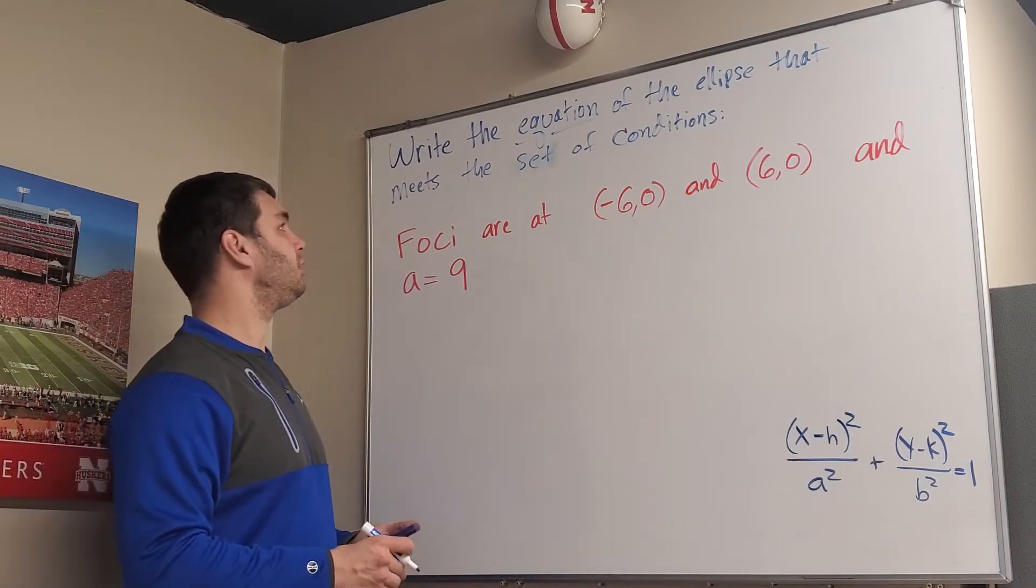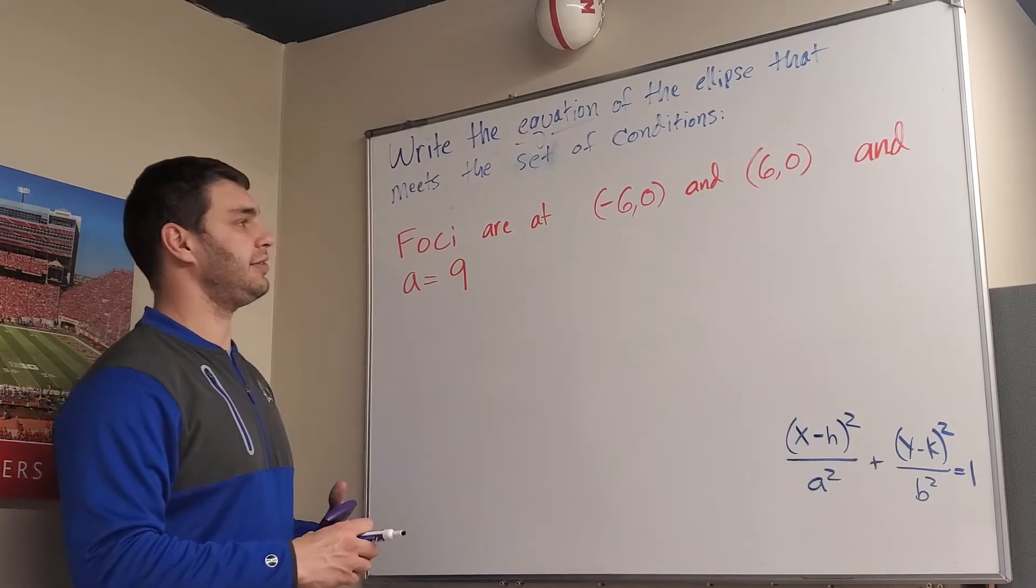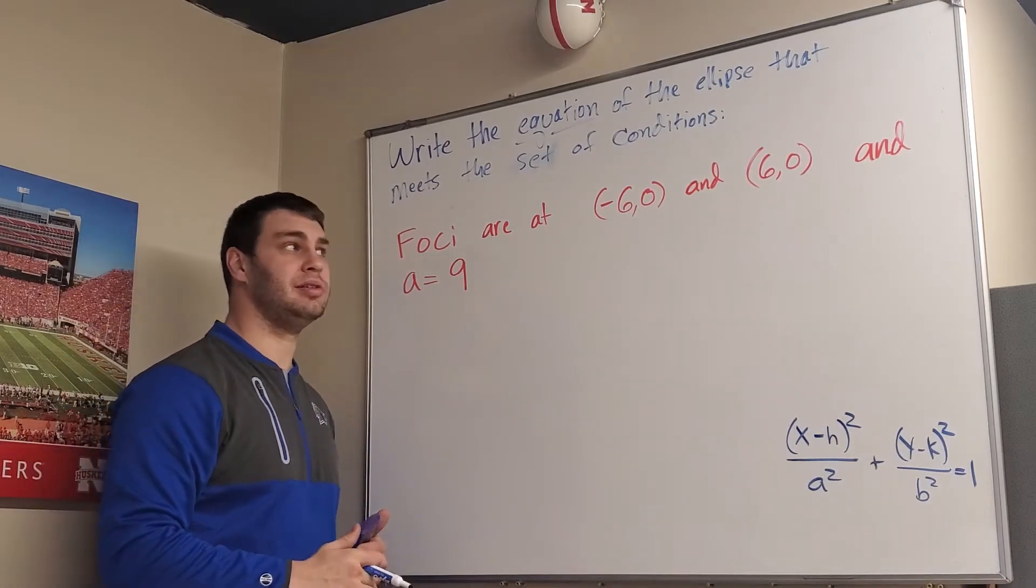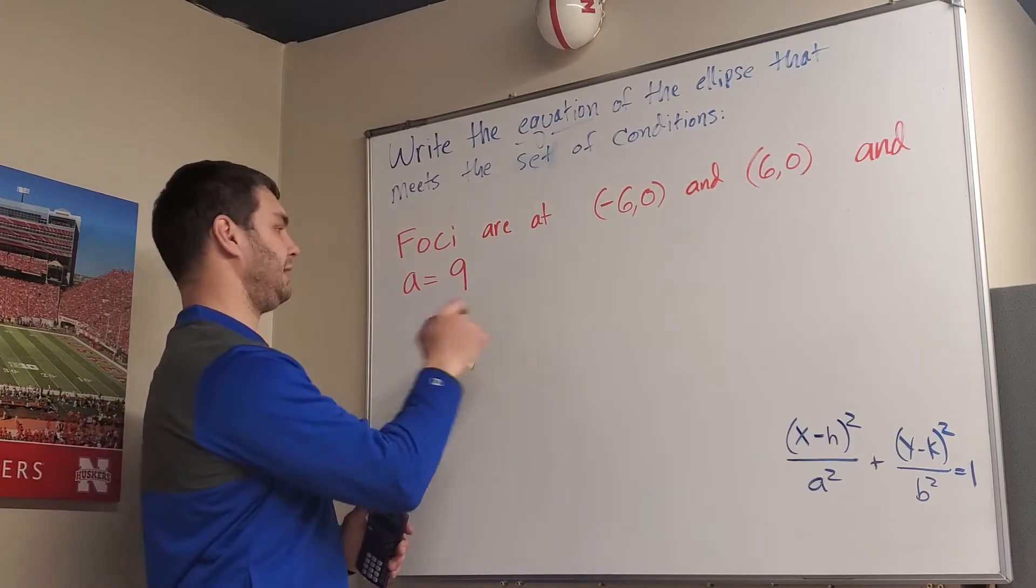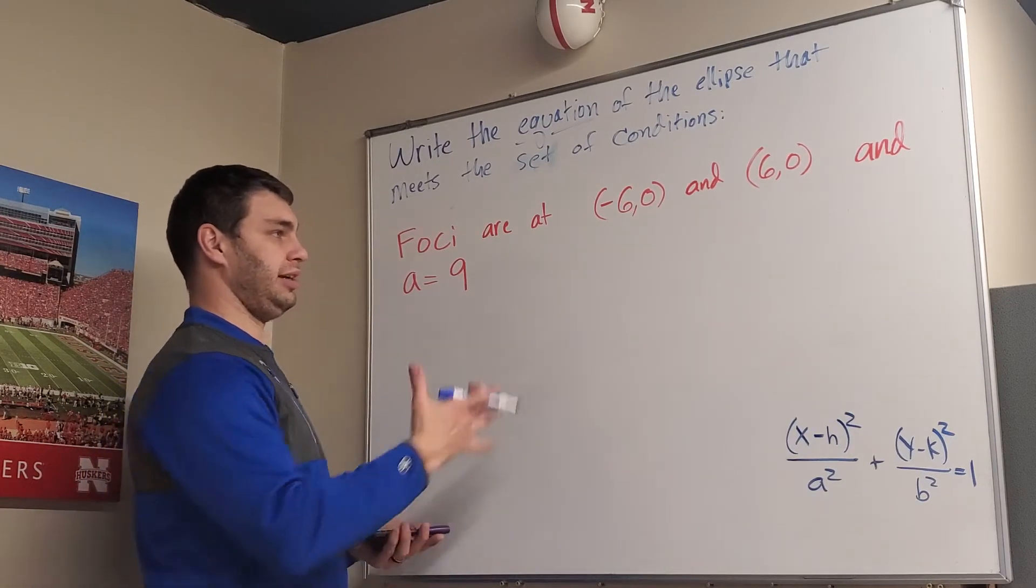Alright guys, here we have a bit of a tricky problem. It says write the equation of the ellipse that satisfies the set of conditions below. All it tells us is that the foci are at (-6,0) and (6,0), and a equals 9. Not very much that they're giving us here.